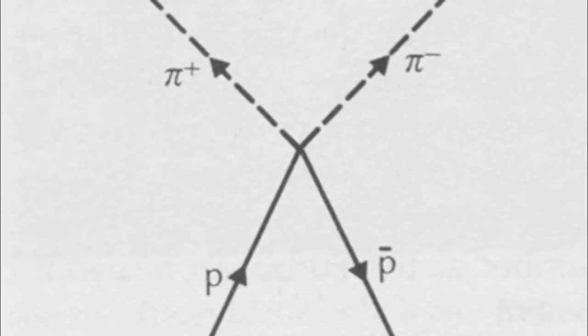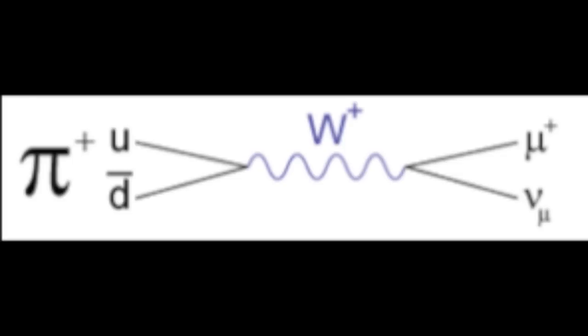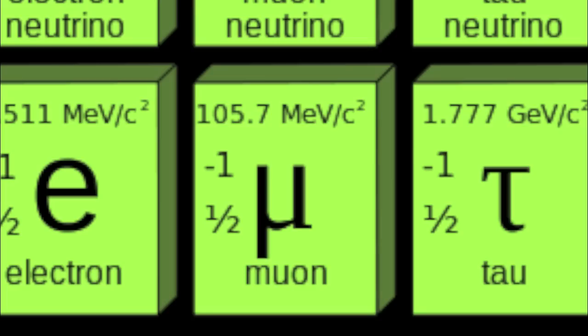Those pions then decay into muons. A muon is sort of like a heavy electron. It has a charge of minus one, but it's much more massive. It has a mean lifetime of about 2.2 microseconds.